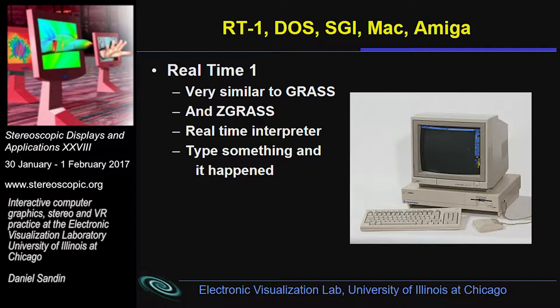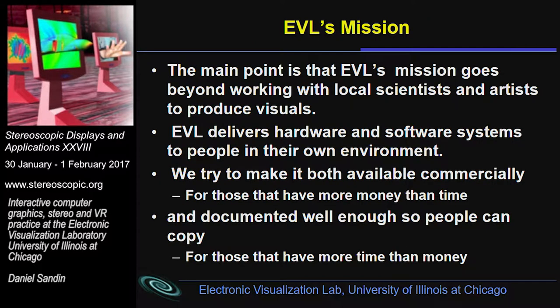RT1 was very similar to GRASS and the ZGRASS system, but ported into very affordable systems. In many respects the language is like Processing — it was designed for artists to use, very interactive, with a lot of video primitives and graphics primitives right near the top where they're easy to use. EVL's mission goes beyond working with local scientists and artists — EVL delivers both hardware and software systems to people in their own environment, making it available commercially for people with more money than time, and available to copy for people with more time than money.